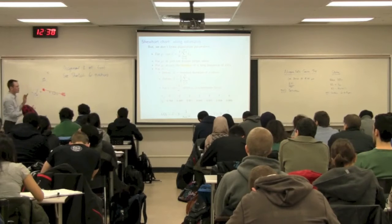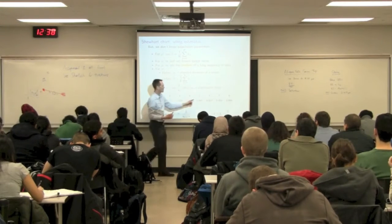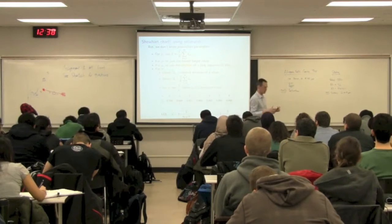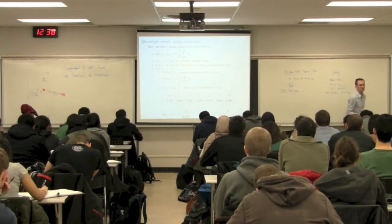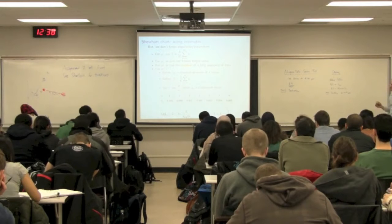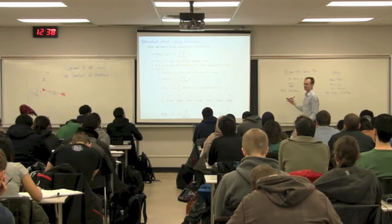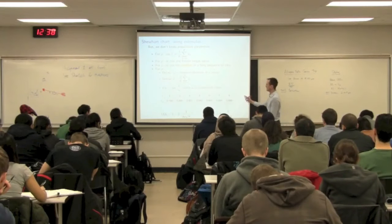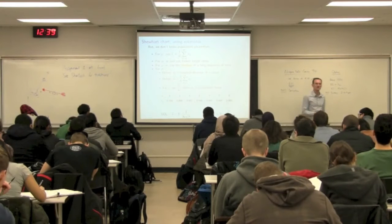So we like larger subgroups, but we recognize the trade-off: the bigger the subgroup, the longer it's going to take to actually catch a problem in my process. Typical subgroup sizes are two, three, four, five, six — you can go larger than that, but those are reasonable values.